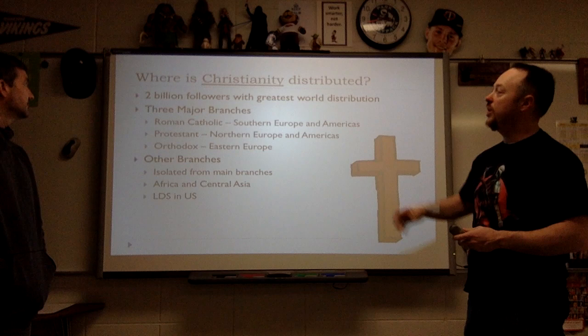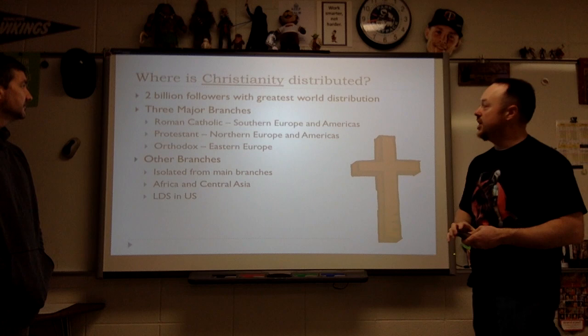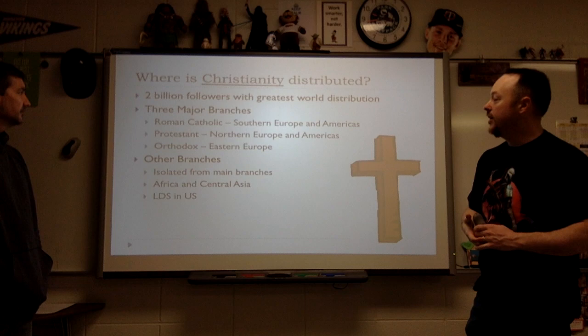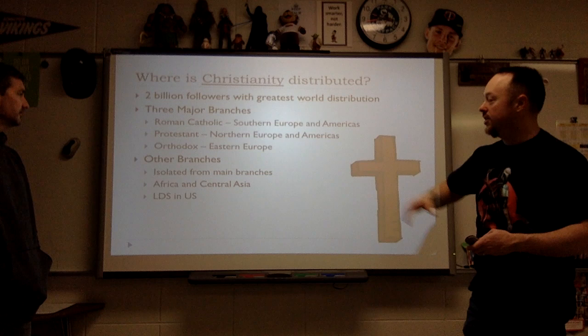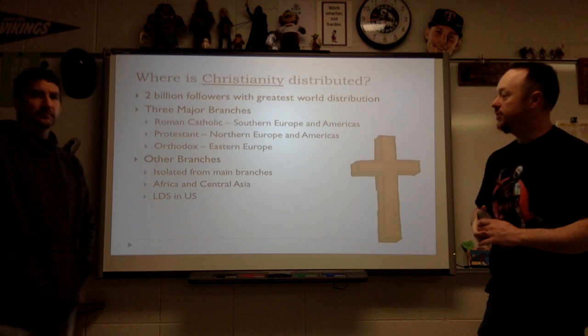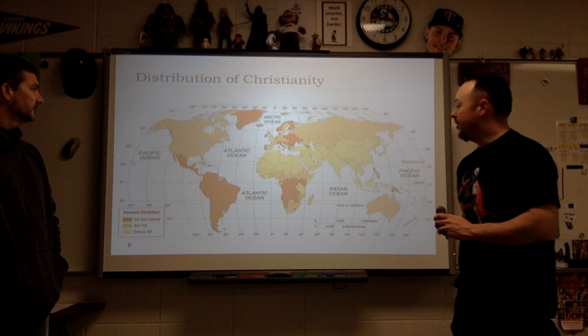We're going to break down the three major universalizing religions. Where is Christianity distributed? There are two billion followers of Christianity around the globe — the number one most populous religion. There are three major branches: Roman Catholic, Protestant, and Eastern Orthodox. We see a lot of people in isolated areas of Africa and Central Asia as being Christian. The Latter-day Saints in the United States are another branch somewhat isolated from the others.